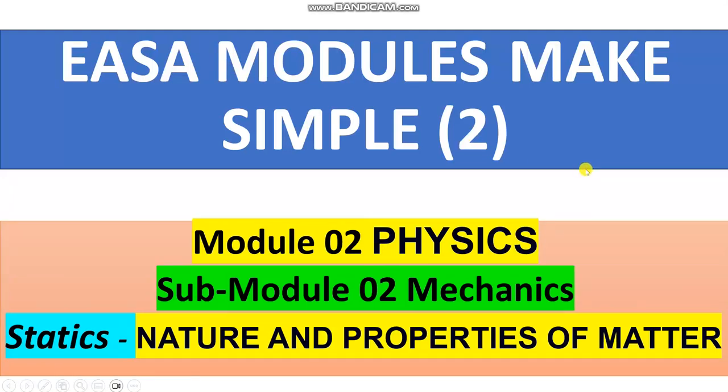Have a nice day everyone. I will continue with this series, EASA modules made simple. The module number two is physics, the sub-module number two is mechanics. This is the subject: nature and properties of matter.